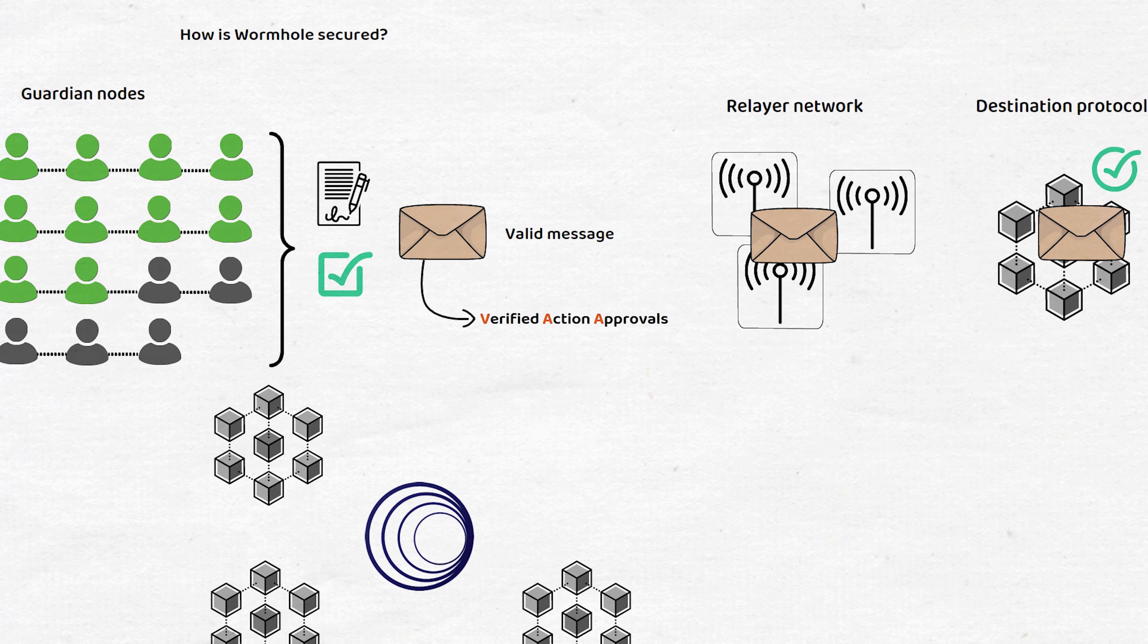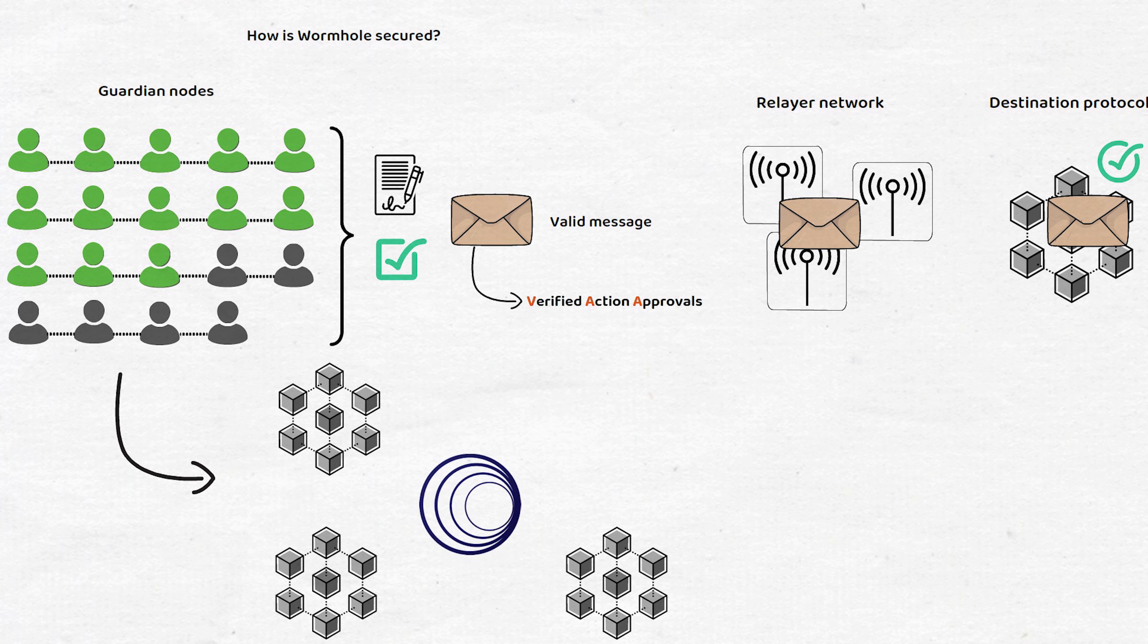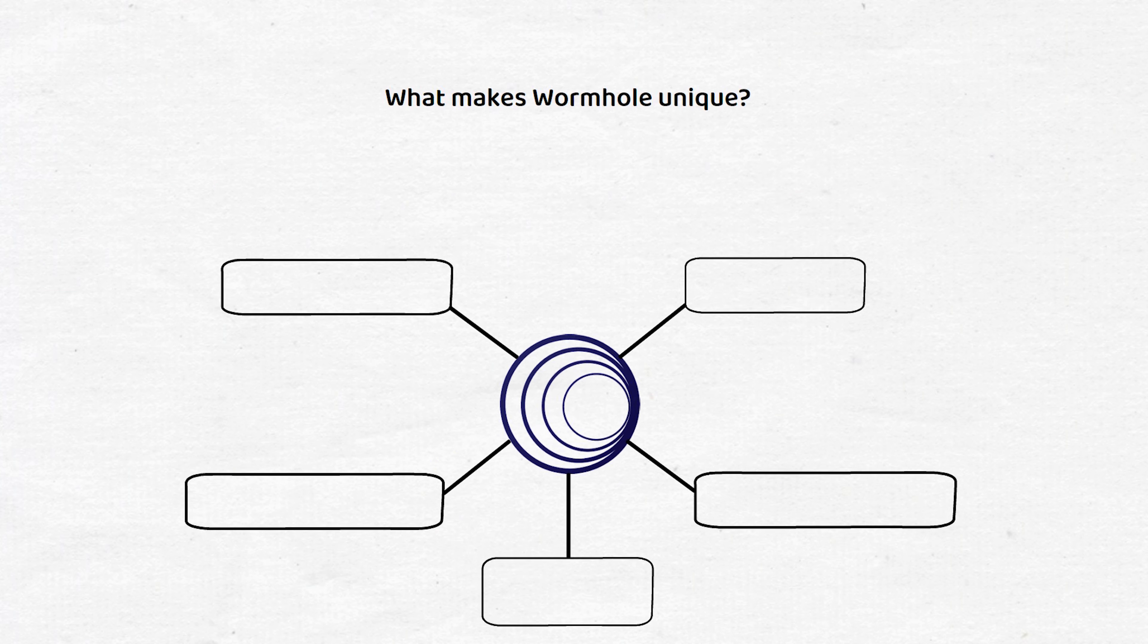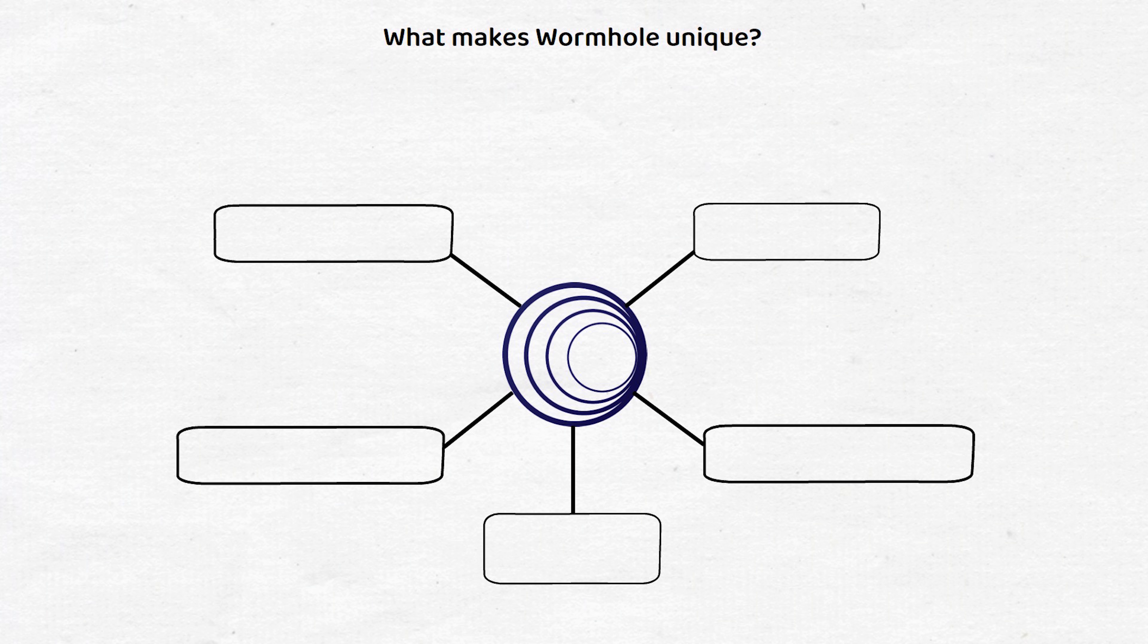In addition to signing messages, these guardians also monitor connected blockchains for anomalies in block production or for any consensus violations. What makes Wormhole unique from its competitors is the projects it's bringing into its current messaging ecosystem.